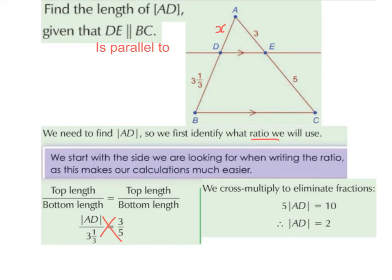So we get 5AD equals 10, or 5X equals 10, depending on whether you used AD or X. Then 10 divided by 5 gives us 2. So the length of AD is going to be 2.